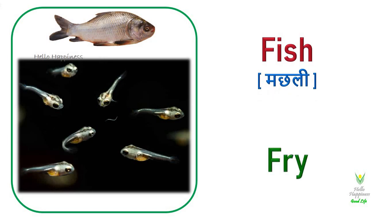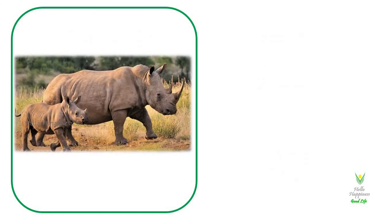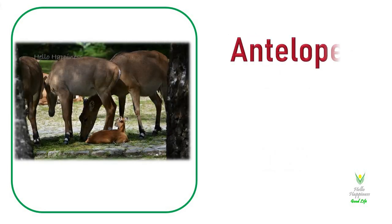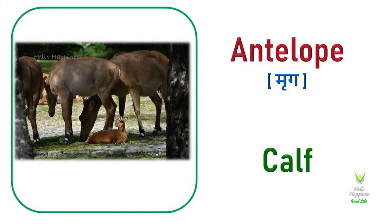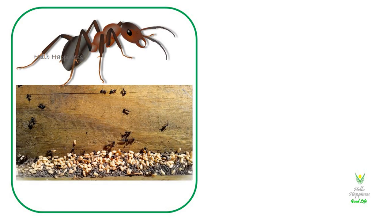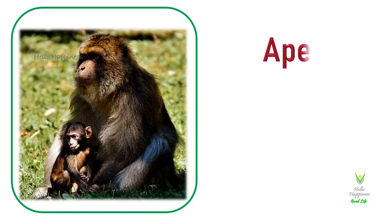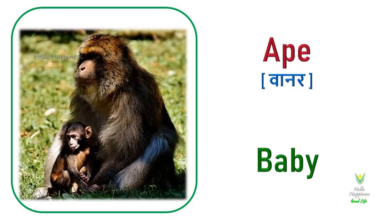Fish. Fish's young one is called a Fry. Rhinoceros. Rhinoceros's young one is called a Calf. Antelope. Antelope's young one is called a Calf. Ant. Ant's young one is called an Antling. Ape. Ape's young one is called a Baby.